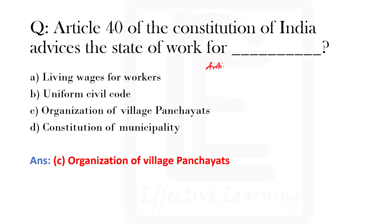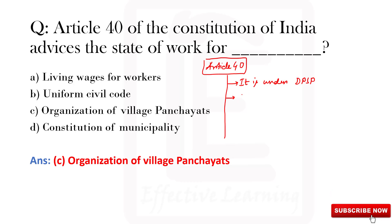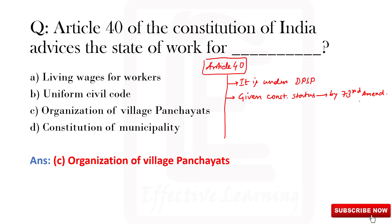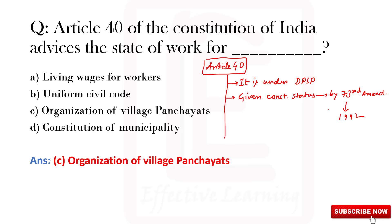Article 40 is under DPSP, that is Directive Principles of State Policy. Article 40 was given constitutional status by the 73rd Amendment, and the 73rd Amendment was initiated in 1992.